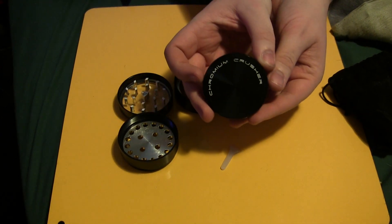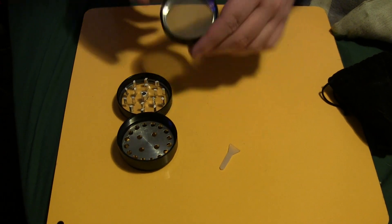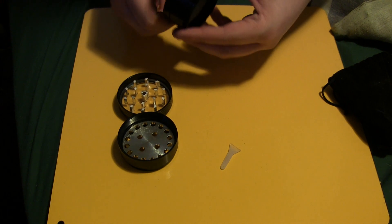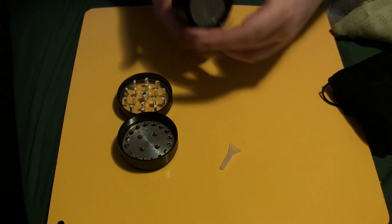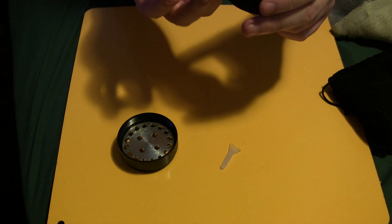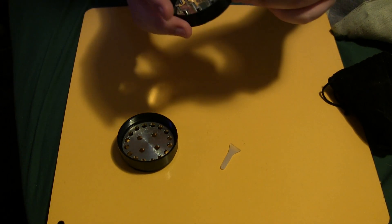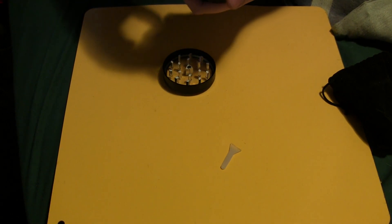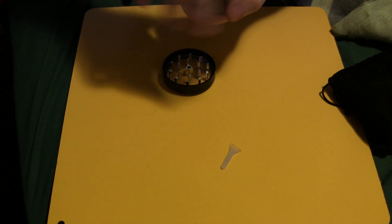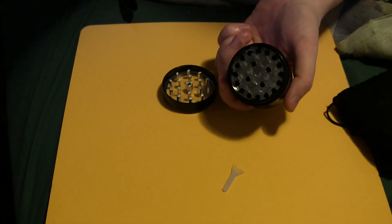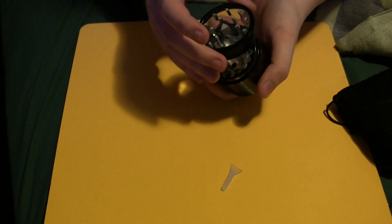This is a chrome crusher. Four part grinder, for the scraper. The difference with this grinder is it has a clear top, so you can actually see the inside of the grinder, as you're grinding up any herbs. Magnetic top.